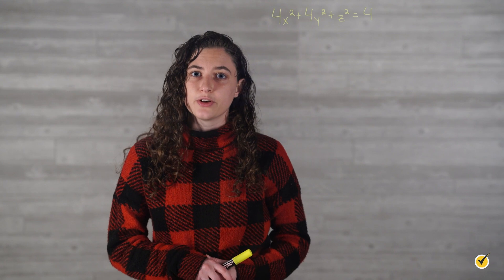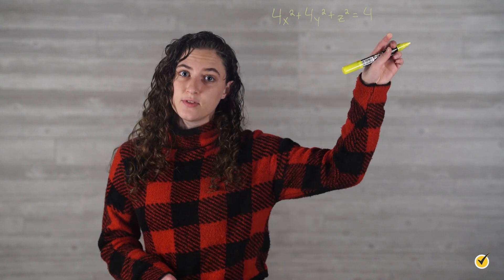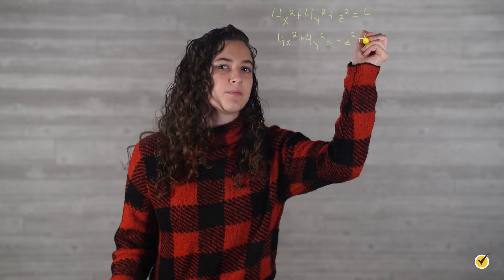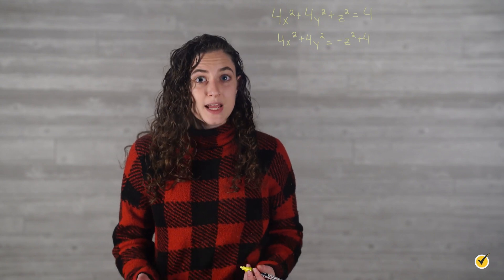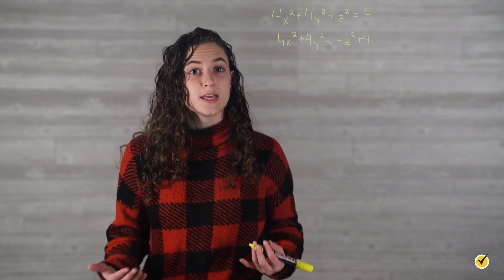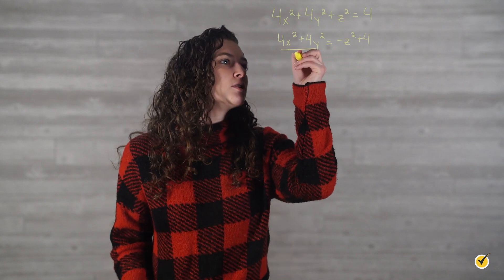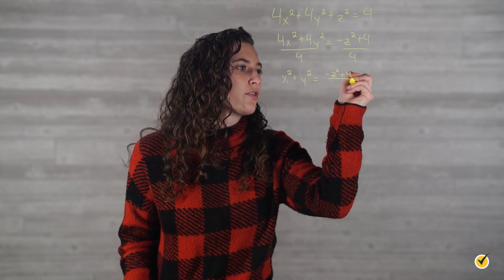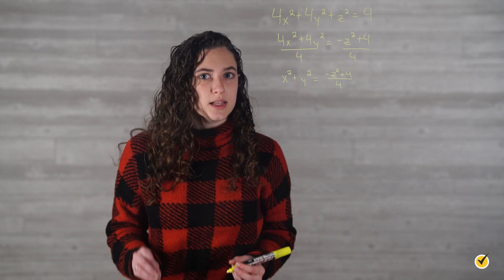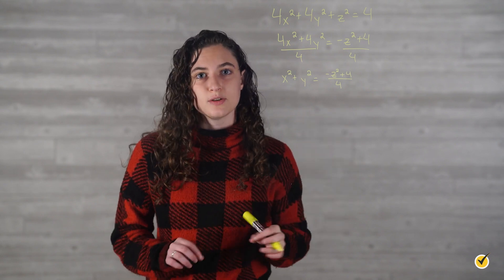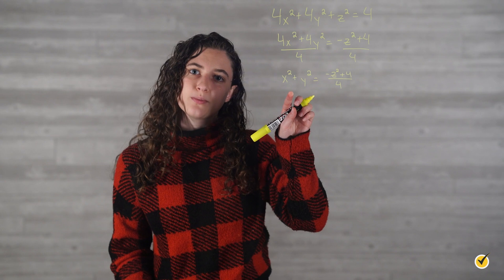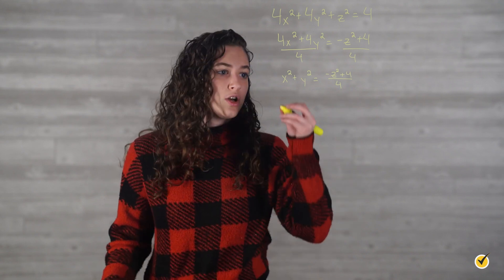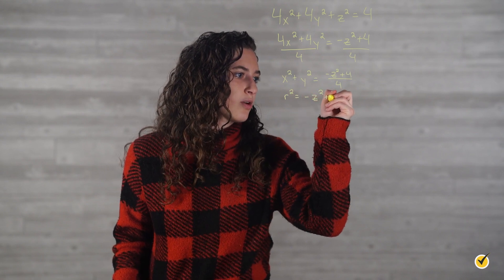Now we need a way of writing this in terms of the variable z. If we move z² to the right-hand side of the ellipsoid equation, we'll get 4x² plus 4y² equals negative z² plus 4. Recall that the equation of a circle with radius r is x² plus y² equals r². We can get something very similar by dividing both sides by 4, giving us x² plus y² equals (negative z² plus 4) over 4. Since the left side equals x² plus y², the right side is equivalent to r² in the equation of a circle. So r² equals (negative z² plus 4) over 4.